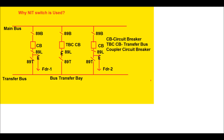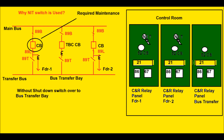Now, to understand the uses of the NIT switch, let us take a simple example as shown in this single line diagram. Here there are two feeders and one bus transfer bay. There is one main bus and one transfer bus. Feeder one is supplying power through closing of 89B and 89L and the closing of the circuit breaker of its own bay. 89B is the main bus side isolator, 89L is the line side isolator, and 89T is the transfer bus side isolator.